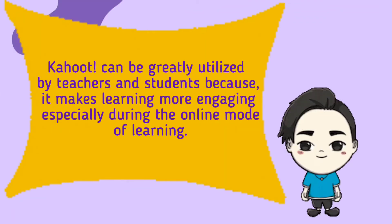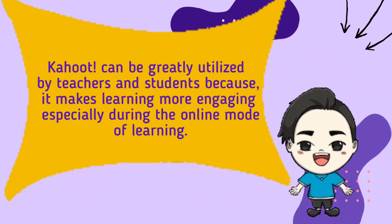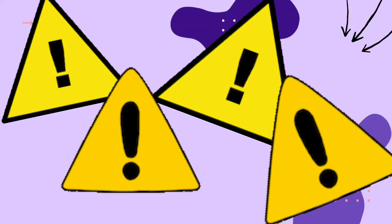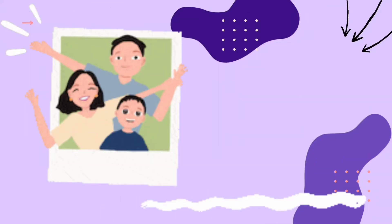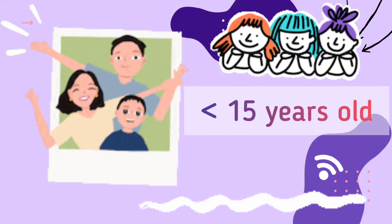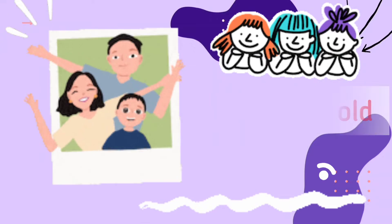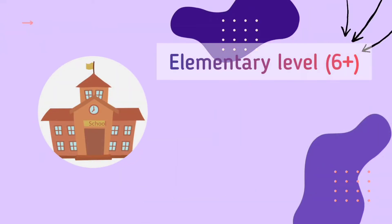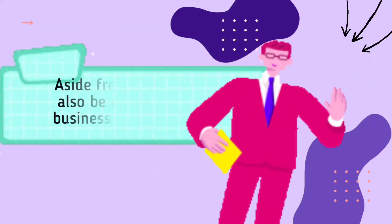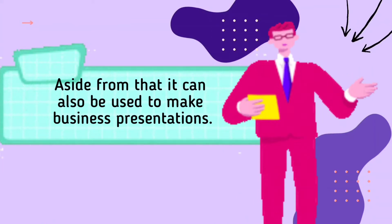Kahoot can be greatly utilized by teachers and students because it makes learning more engaging, especially during the online mode of learning. However, the app is too complex for children under 6 years old, and parental guidance is recommended up to 15 years old due to online connectivity and interaction with other players. So in school, it can be used by elementary students ages 6 and above, on secondary and tertiary levels. Aside from that, it can also be used to make business presentations.